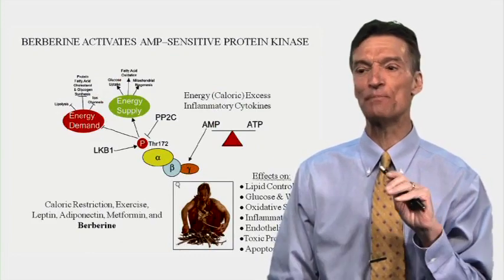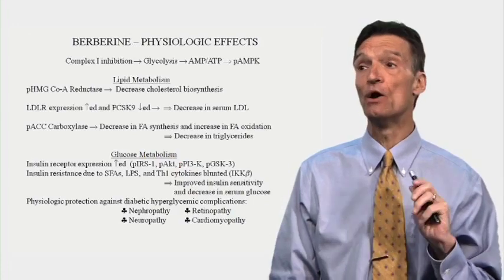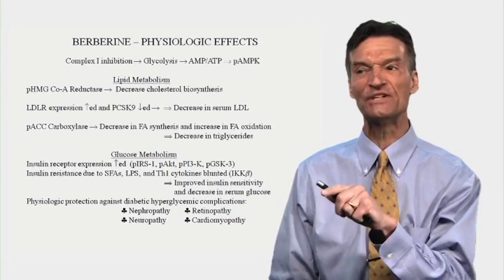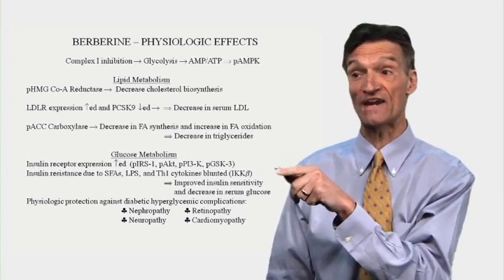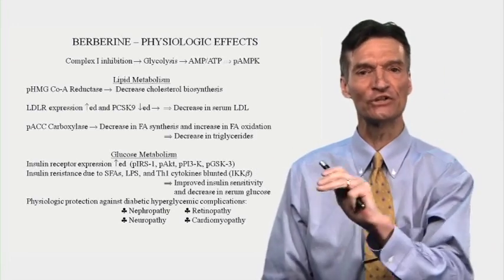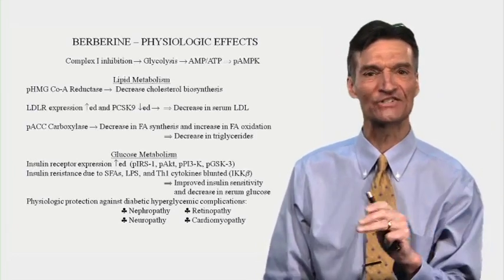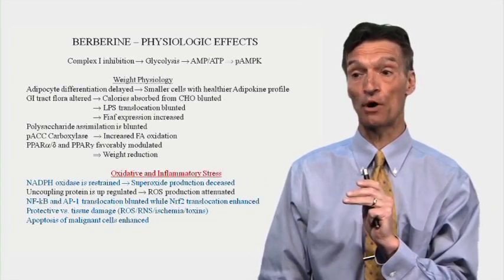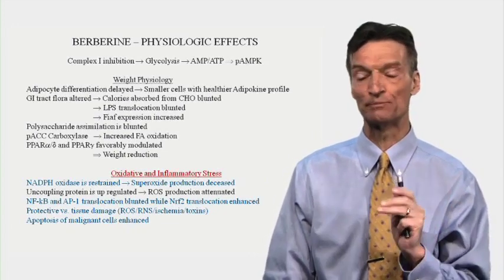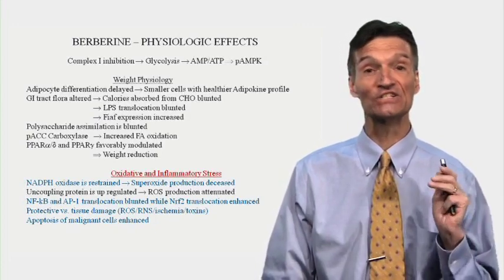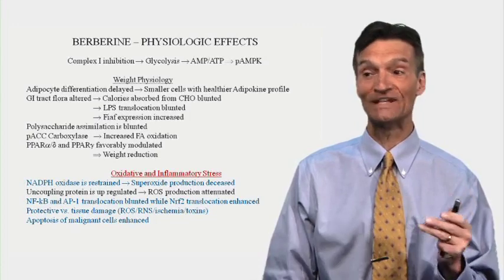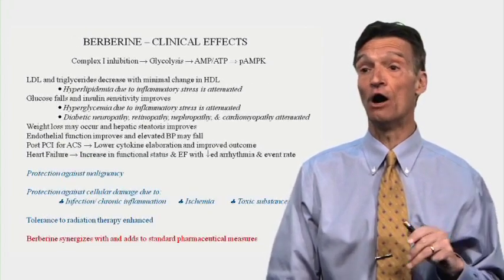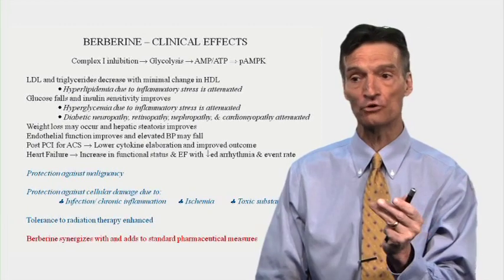This is why we're seeing heart attacks in people with normal cholesterol — it's not just the cholesterol; it's how your body handles it with inflammation. We move it from the liver into the artery wall, we oxidize our lipids, they look like bacteria, we activate the immune system further, and we get hyperglycemia and tissue damage. Berberine can mitigate all this by activating AMPK. When we activate AMPK, we physiologically down-regulate HMG-CoA reductase, stabilize the LDL receptor mRNA, block PCSK9, decrease LDL, fatty acids, and triglycerides, make more insulin receptors, improve insulin signaling, blunt hyperglycemia, help with weight, restrain NADPH oxidase, make less superoxide, blunt NF-κB and AP-1 translocation, while enhancing Nrf2 translocation.